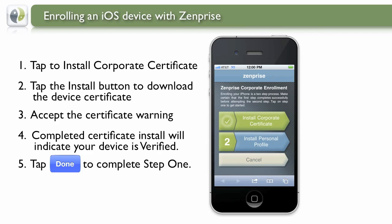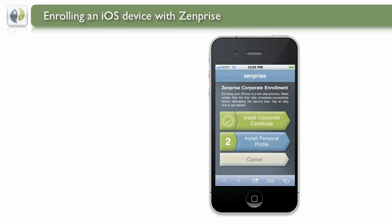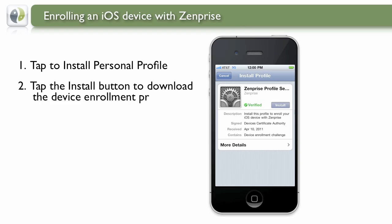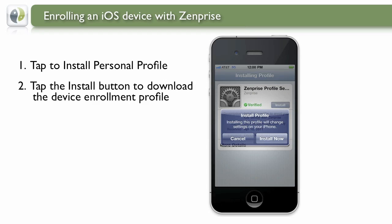Now we'll complete the second and final step for enrollment: installing a personal profile. Tapping the Install Personal Profile button gets you on your way to configure your phone for all the necessary settings to participate in the company network. Important settings such as the device password policy, your email account, WiFi, and VPN settings are all part of the personal profile. Tap the Install button to download the device enrollment profile.